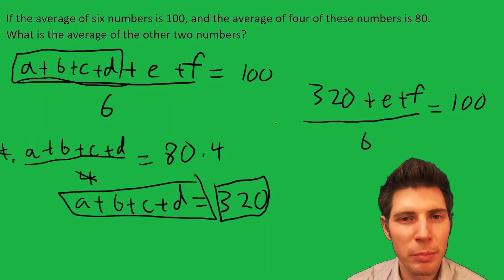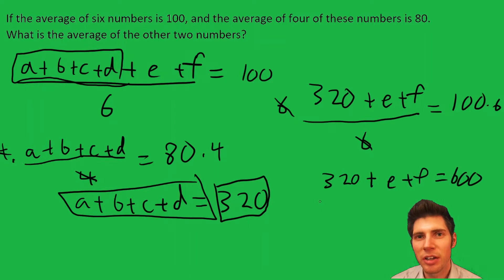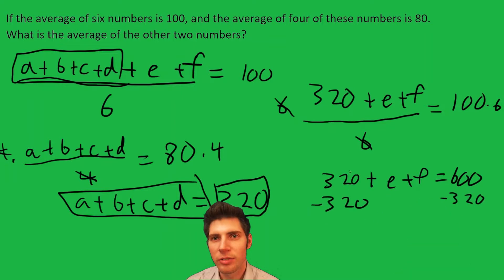Now I can multiply both sides by six. These sixes cancel. I get 320+e+f = 600. Now I'm just going to subtract 320 from both sides, and I get e+f equals 600 minus 320, which is 280.